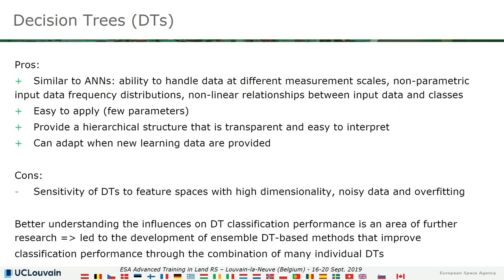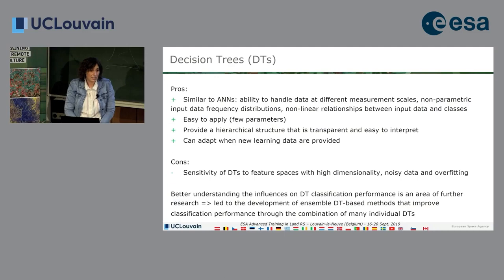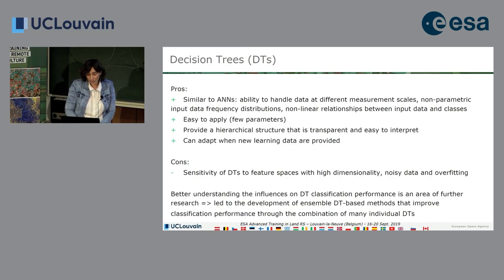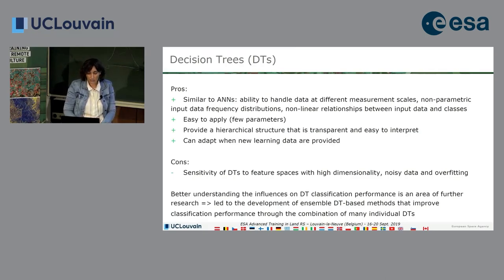The advantages are very similar to the artificial neural network: it is robust against non-normal frequency distributions, really easy to apply with few parameters, and the structure is transparent and easy to interpret — so this is not a black box. The disadvantage is that when you have a feature space with high dimensionality, a single decision tree is very difficult to handle.